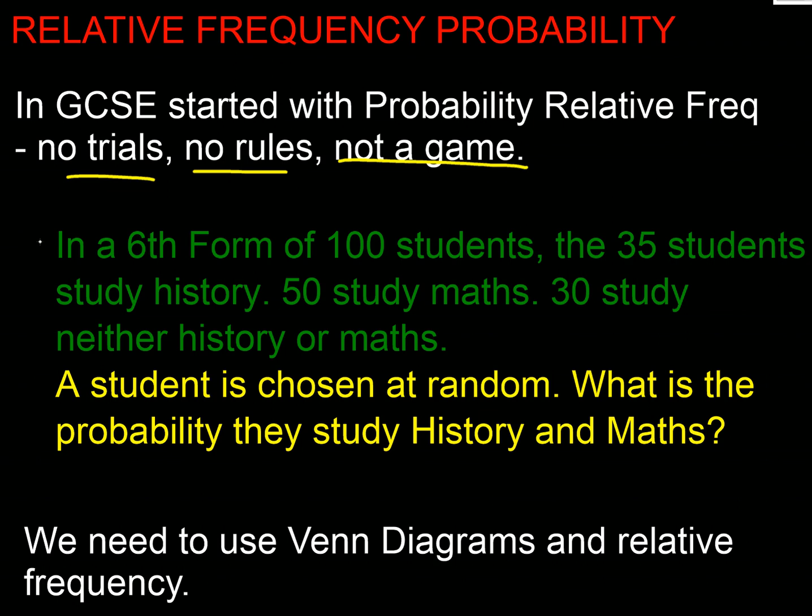So classic example here: a sixth form has 100 students, 35 studying history, 50 studying maths, and 30 studying neither history or maths. The question is, if we select somebody at random, what's the probability that they study history and maths?